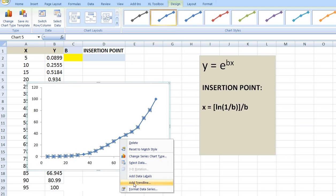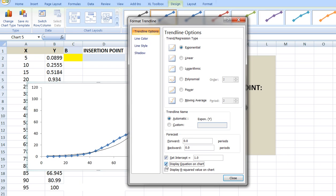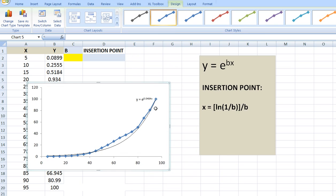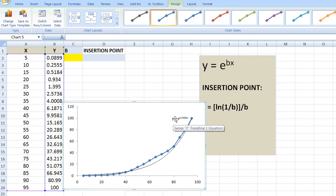Add a trendline. In the trendline options, choose exponential, set the intercept, and display the equation on chart. Close it, and there we have it.